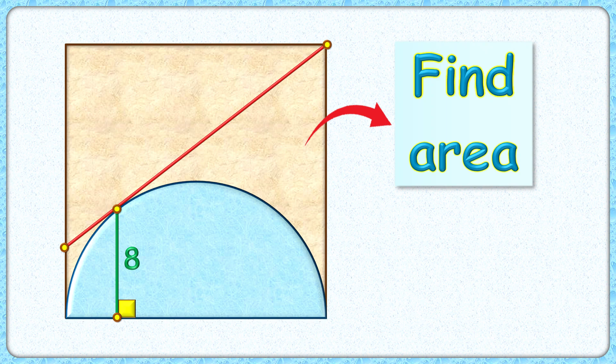Welcome everyone to this interesting question. Given to us is a square with a semicircle inside it. This red line segment is the tangent to the semicircle, and this green line segment that's 8 centimeters is the distance of this point of tangency from the base of the square. The exciting part is with this limited data we have to find the area of the square.